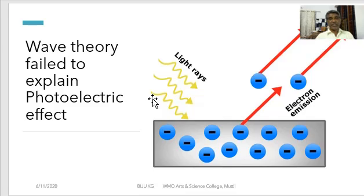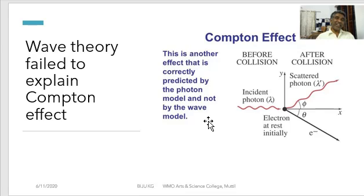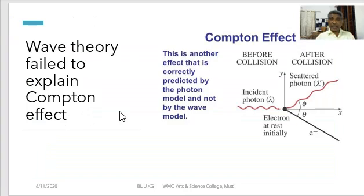Wave theory also failed to explain the Compton effect. This is another effect that is correctly predicted by the photon model and not by the wave model. We will study the Compton effect in detail later. These phenomena — blackbody radiation spectrum, photoelectric effect, and Compton effect — can all be satisfactorily explained only by assuming the particle nature of light.